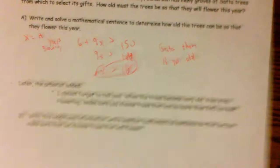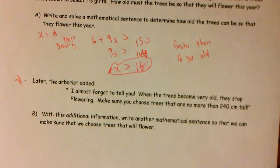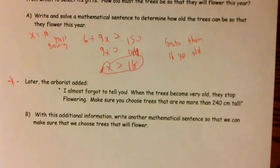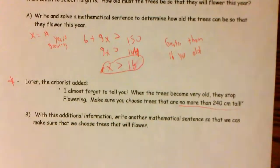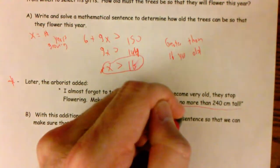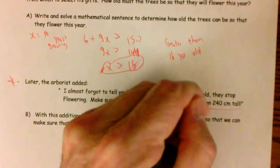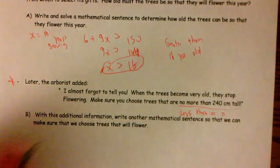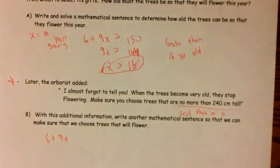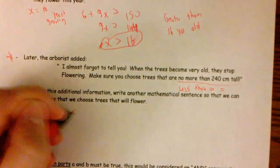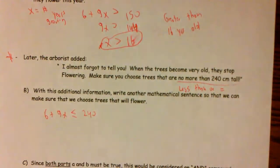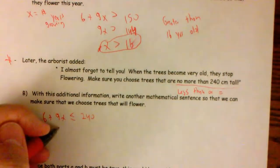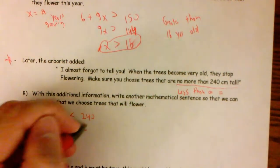All right. But then we got this one more tidbit from the arborist. I almost forgot to tell you, when the trees become very old, they stop flowering. Make sure you choose trees that are no more than 240 centimeters tall. So they have put another inequality in here. We need the trees to be no more than 240. And another way of saying no more than is less than or equal. So I also need the height. We know what the height is. The height is six plus nine X. And we need that height to be less than or equal to 240.